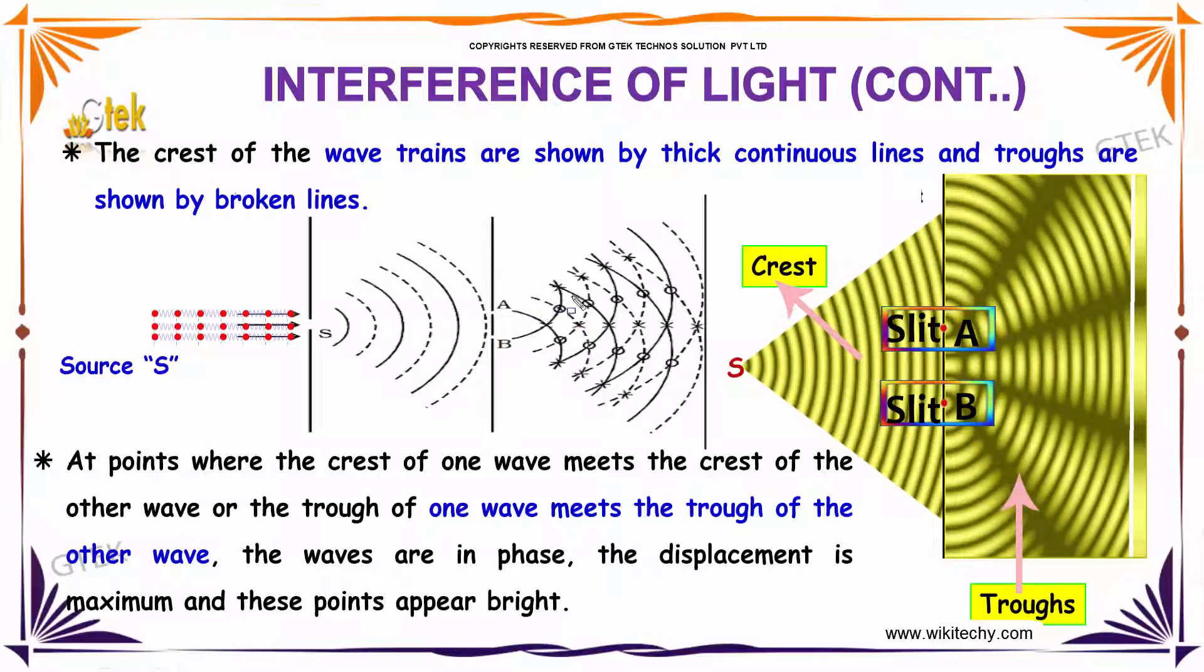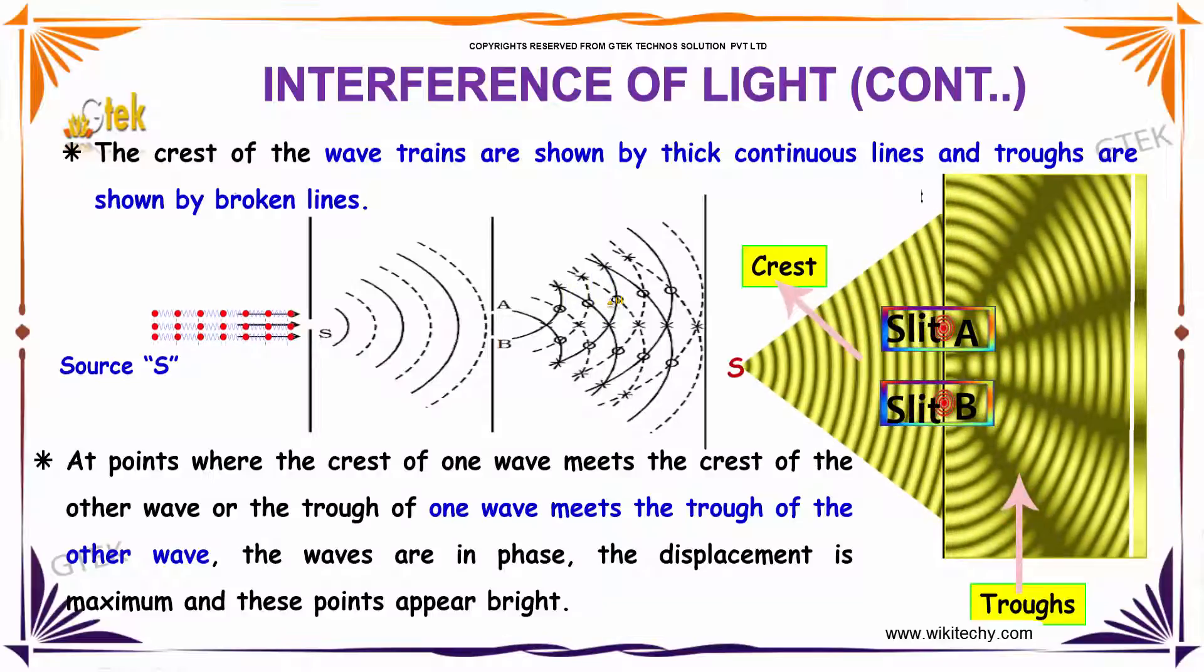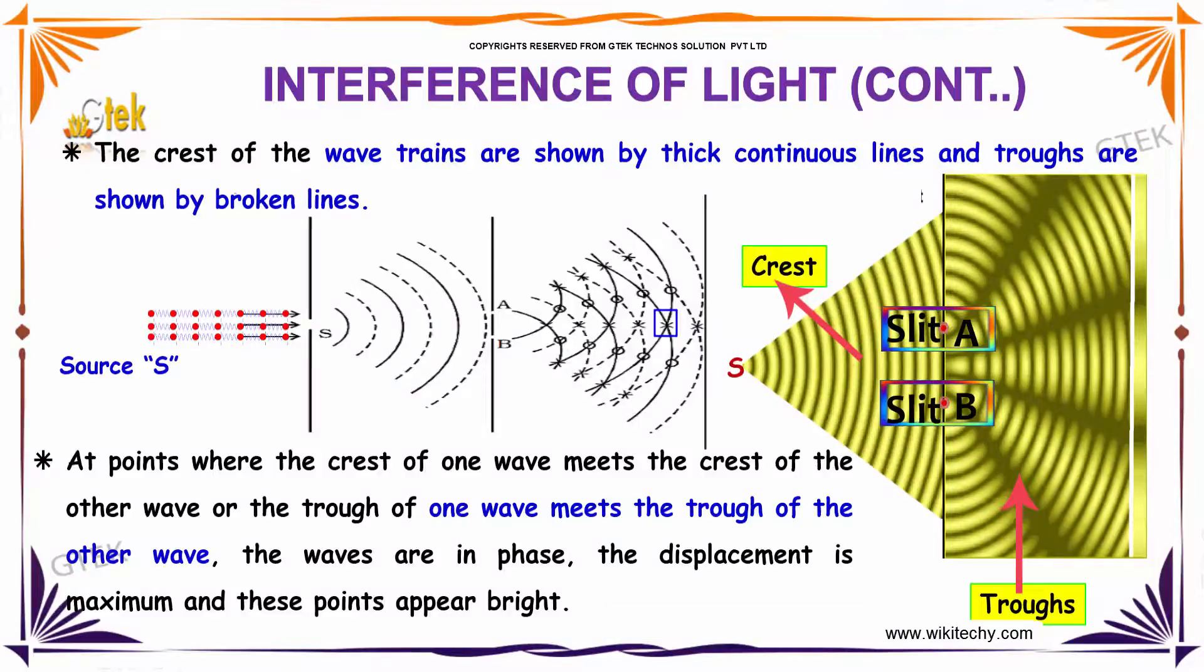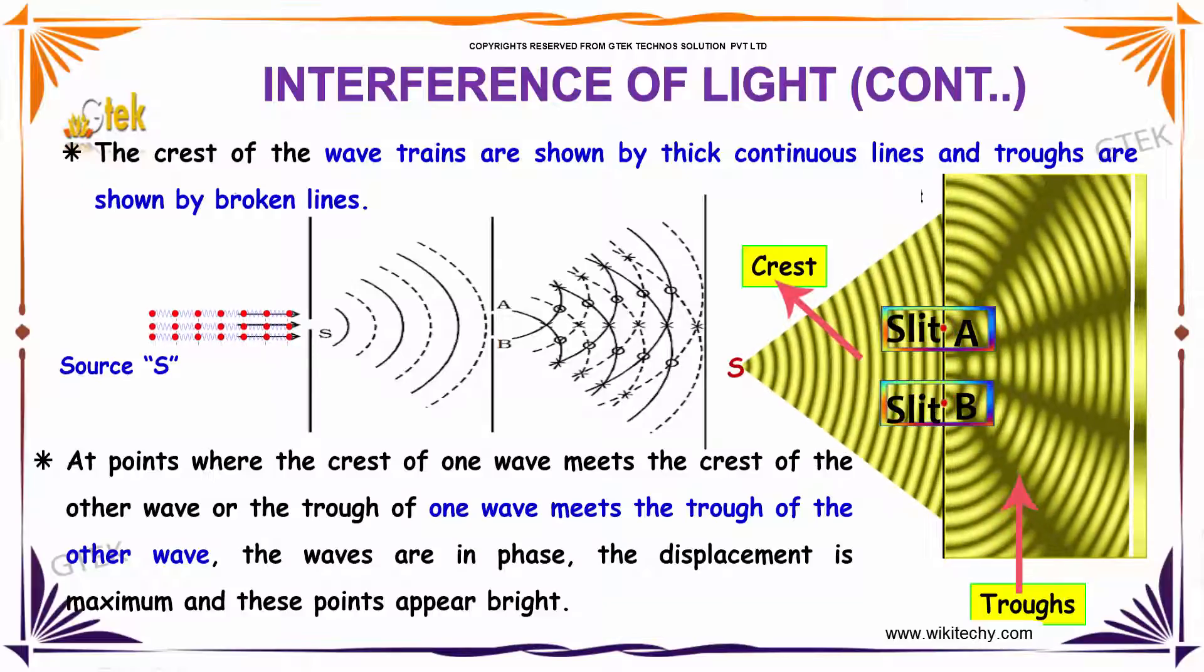This is called as crest and this is called as troughs. At points where the crest of one wave meets the crest of another wave or the trough of one wave meets another trough of the other wave, the waves are in phase. The displacement is maximum and these points appear bright. You are able to see the brighter one, that's crest, and the darker one, that's your troughs.